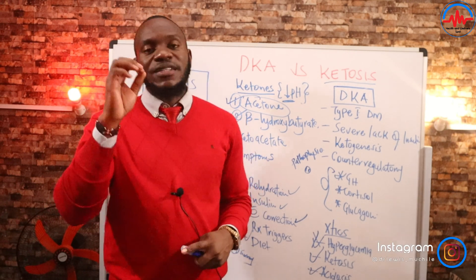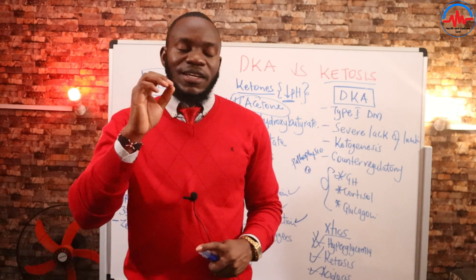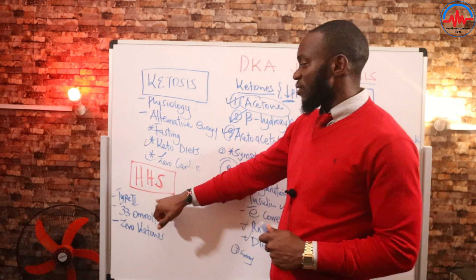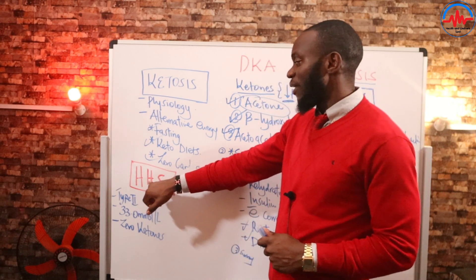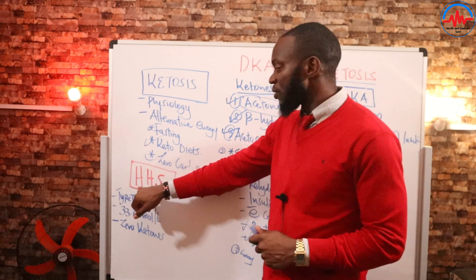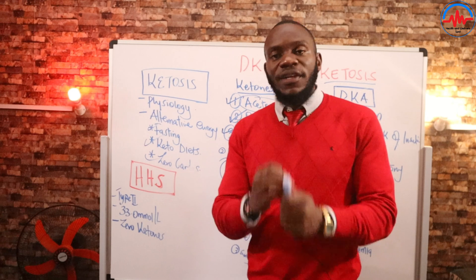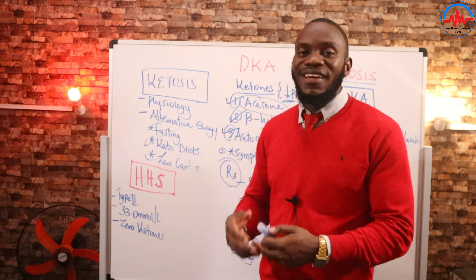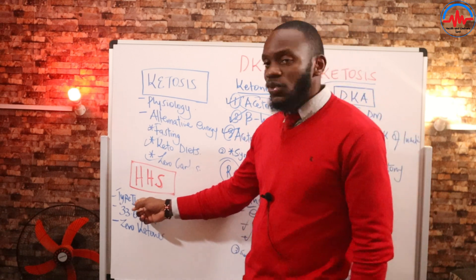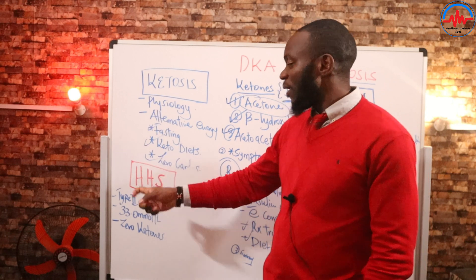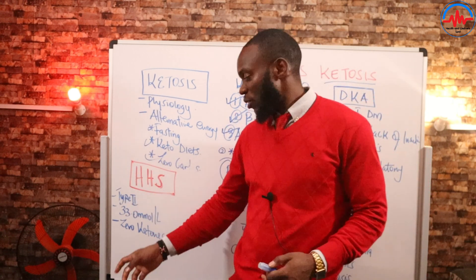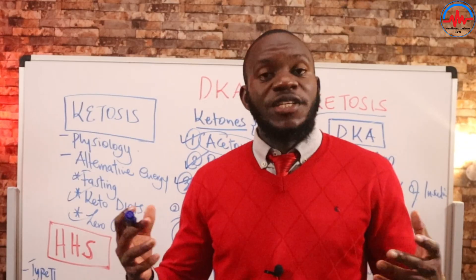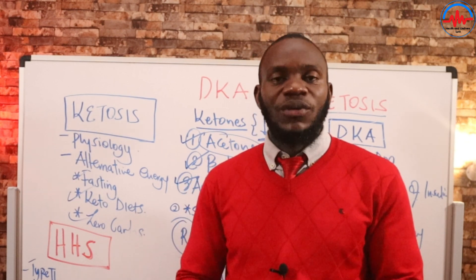As I end this video, there is another emergency situation in type 2 diabetes called HHS — hyperosmolar hyperglycemic state. HHS is actually similar to DKA only in that HHS we do not have ketone bodies; we do not break down fat to get ketone bodies, or if they are there they are very minimal. In HHS there is always a rise in blood sugar levels to a maximum of 33.0 millimoles per liter — that is very high. HHS is a serious medical emergency.